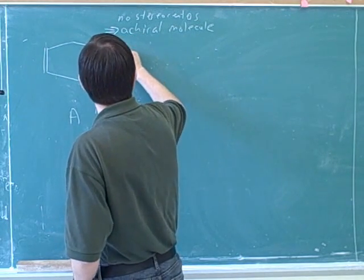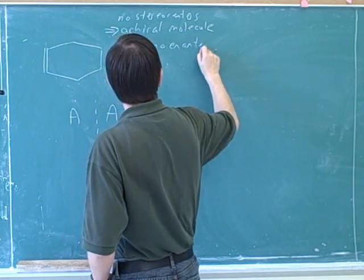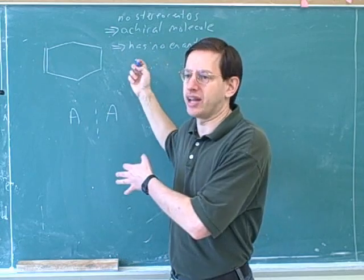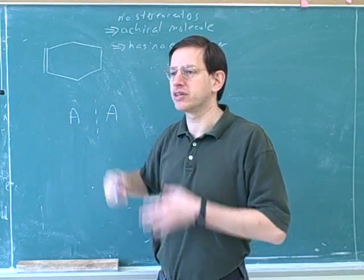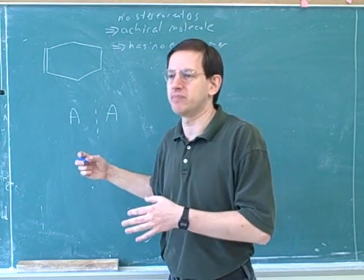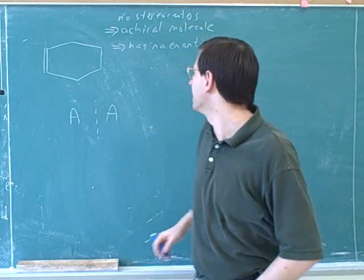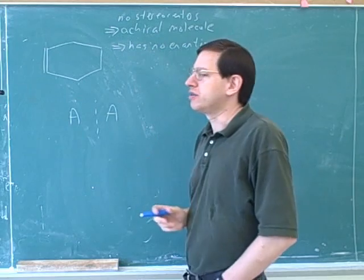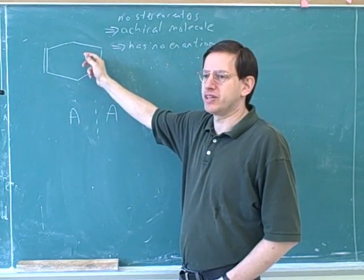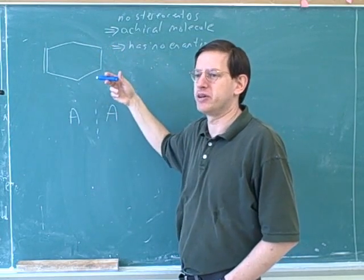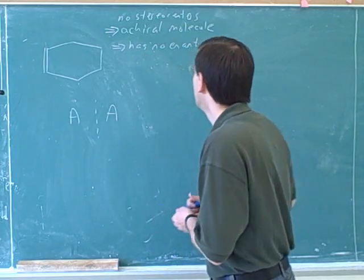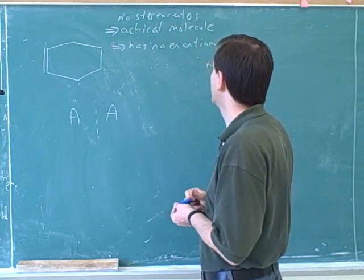So this first molecule has no enantiomer. This is important even if you're past stereochemistry, because instructors often say 'draw all possible products including stereoisomers.' Many reactions produce both a molecule and its enantiomer if one exists. The easiest way to see this molecule has no enantiomer is that it has no stereocenters. You could also draw the mirror image and try to superimpose it, but stereocenters are a much faster shortcut.